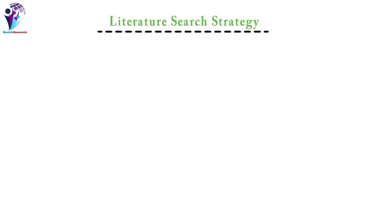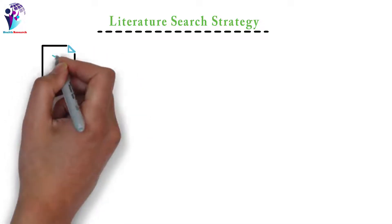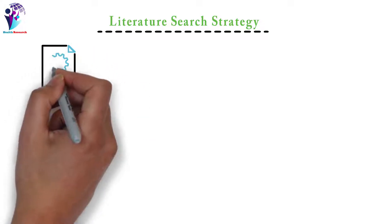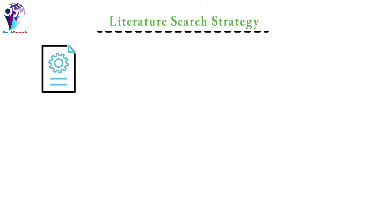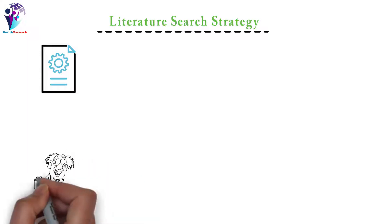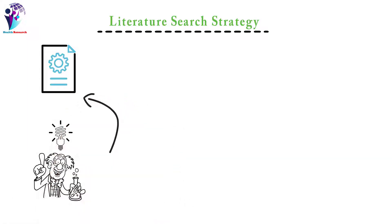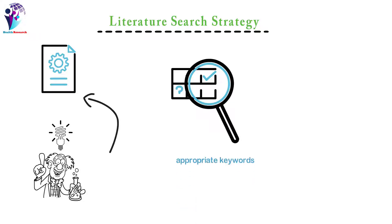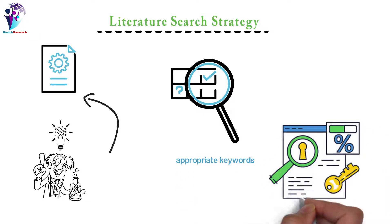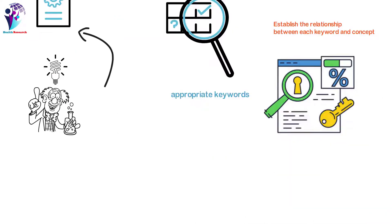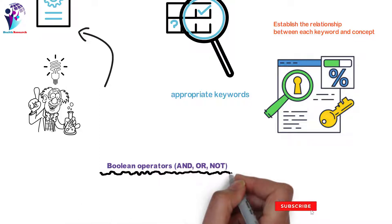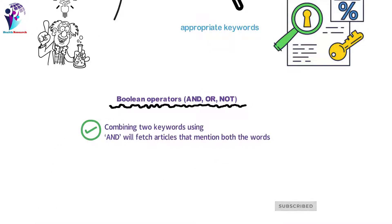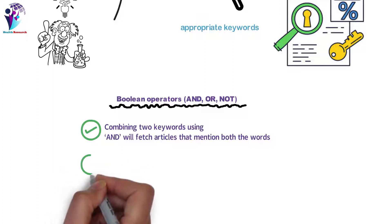The strategy for literature search: first, summarize your topic in one or two sentences. Second, identify the unique ideas or concepts associated with your topic, then choose appropriate keywords for each concept. Establish the relationship between each keyword and concept. Combine different keywords using Boolean operators. Combining two keywords using 'AND' will fetch articles that mention both words.